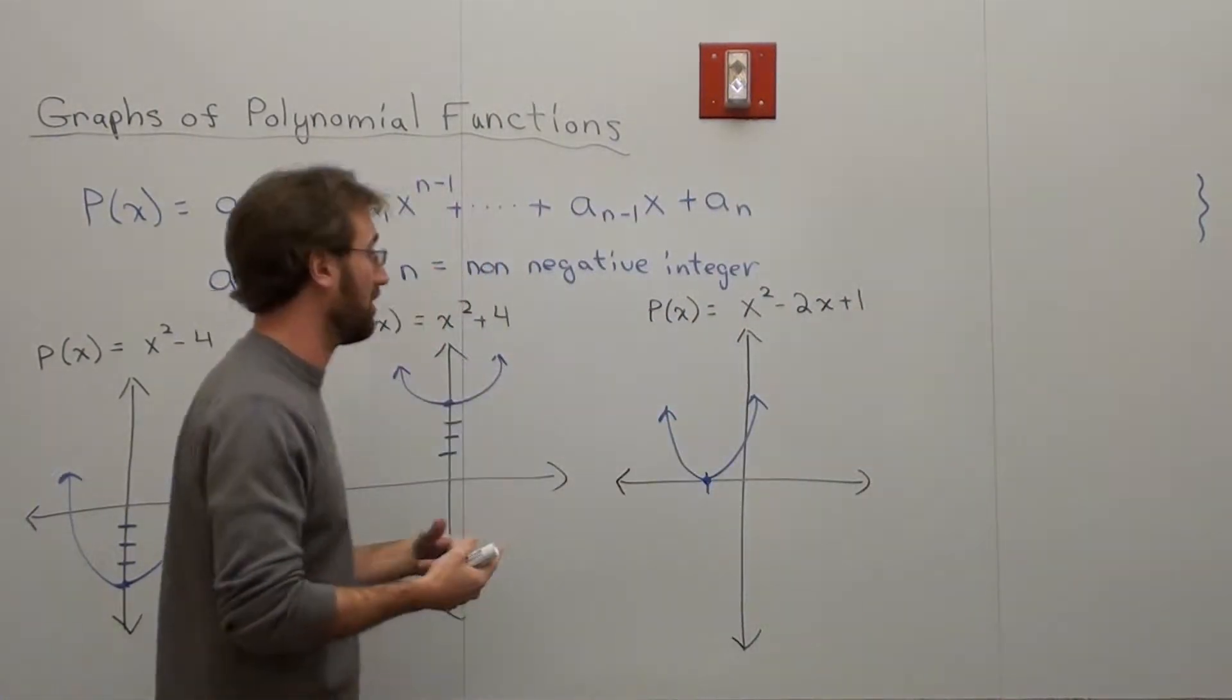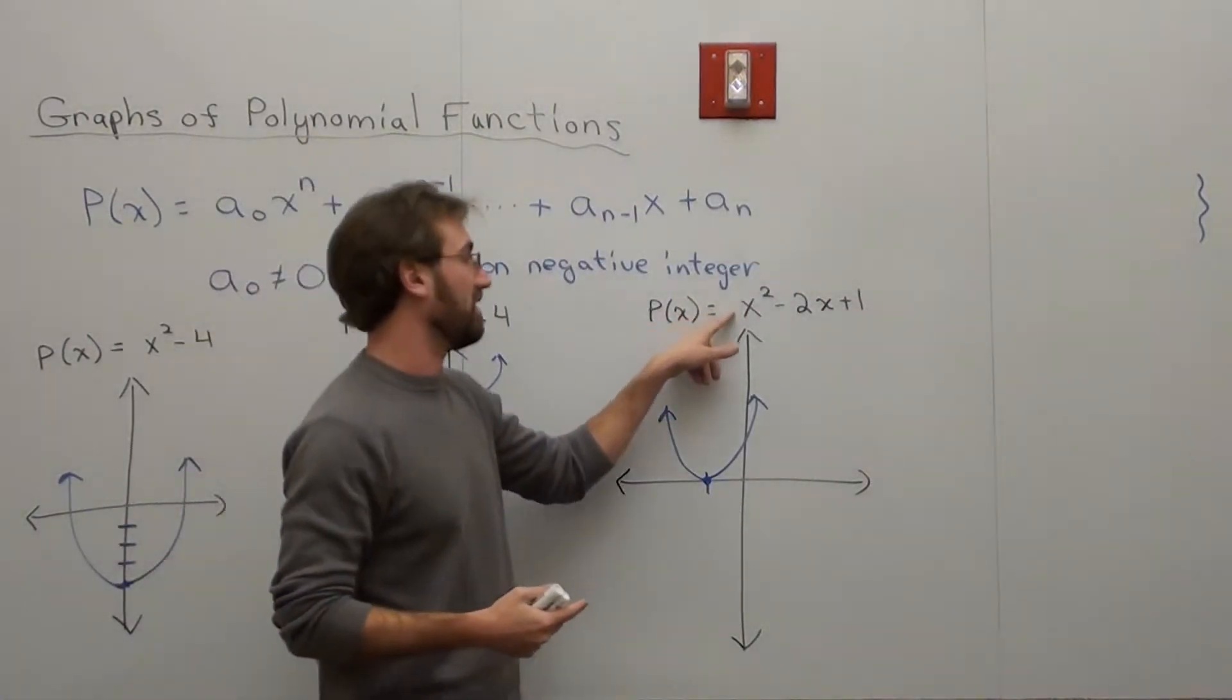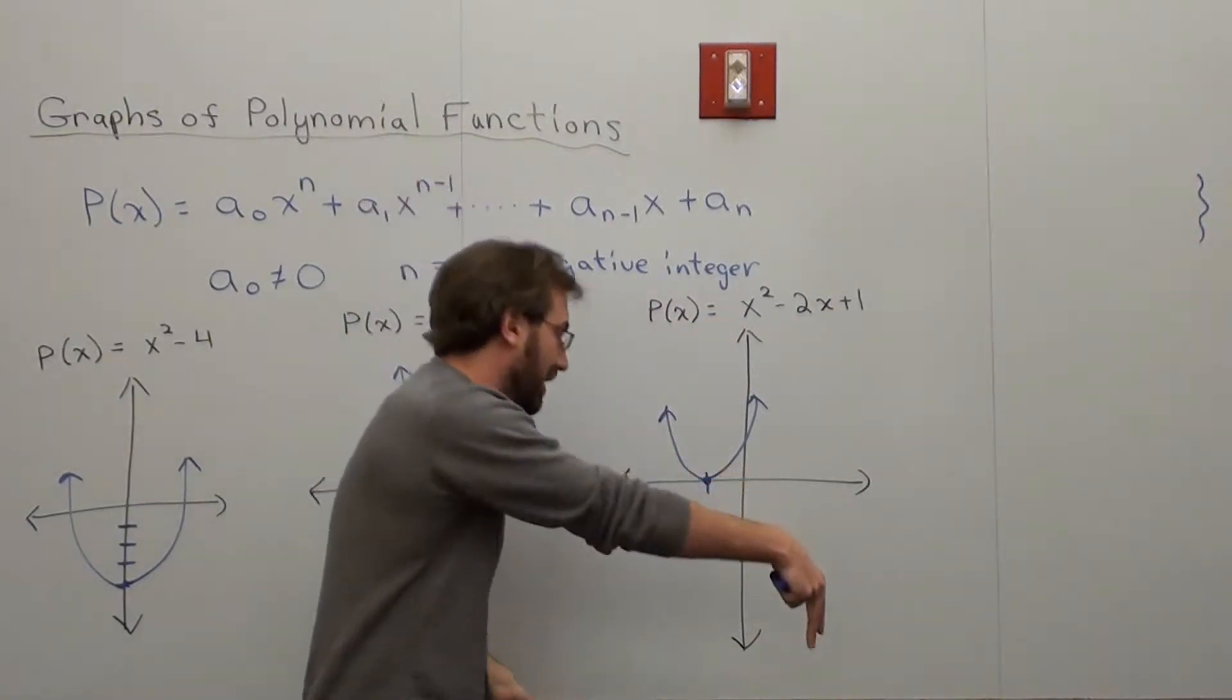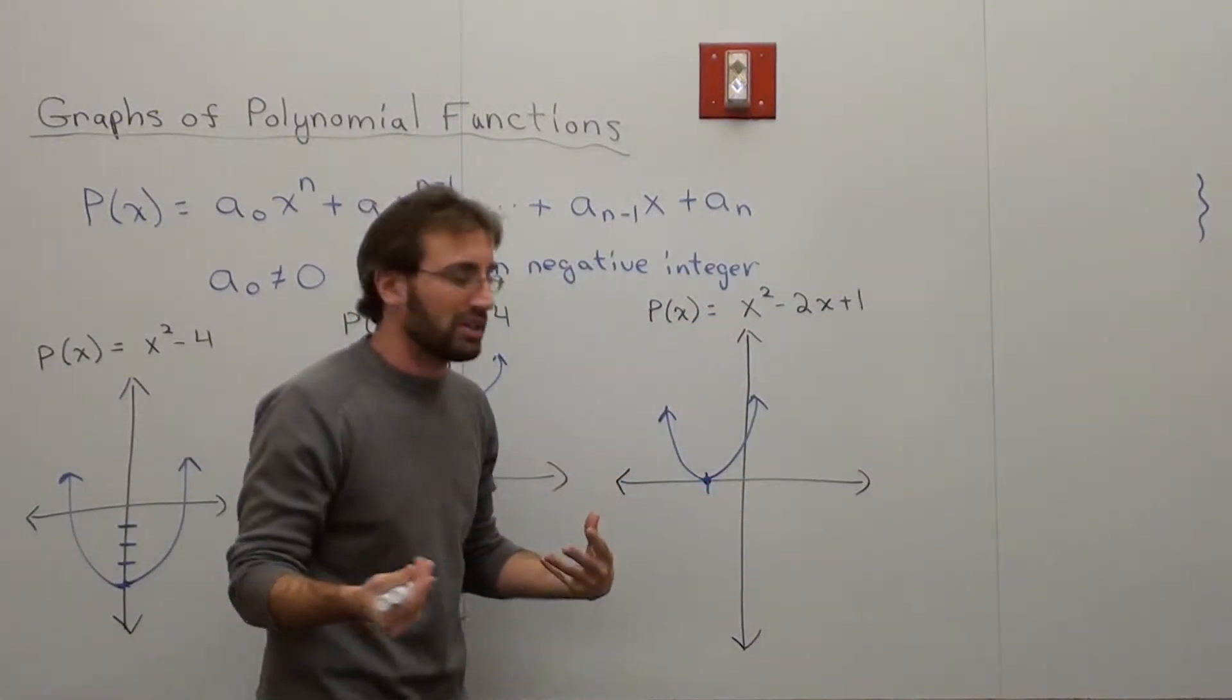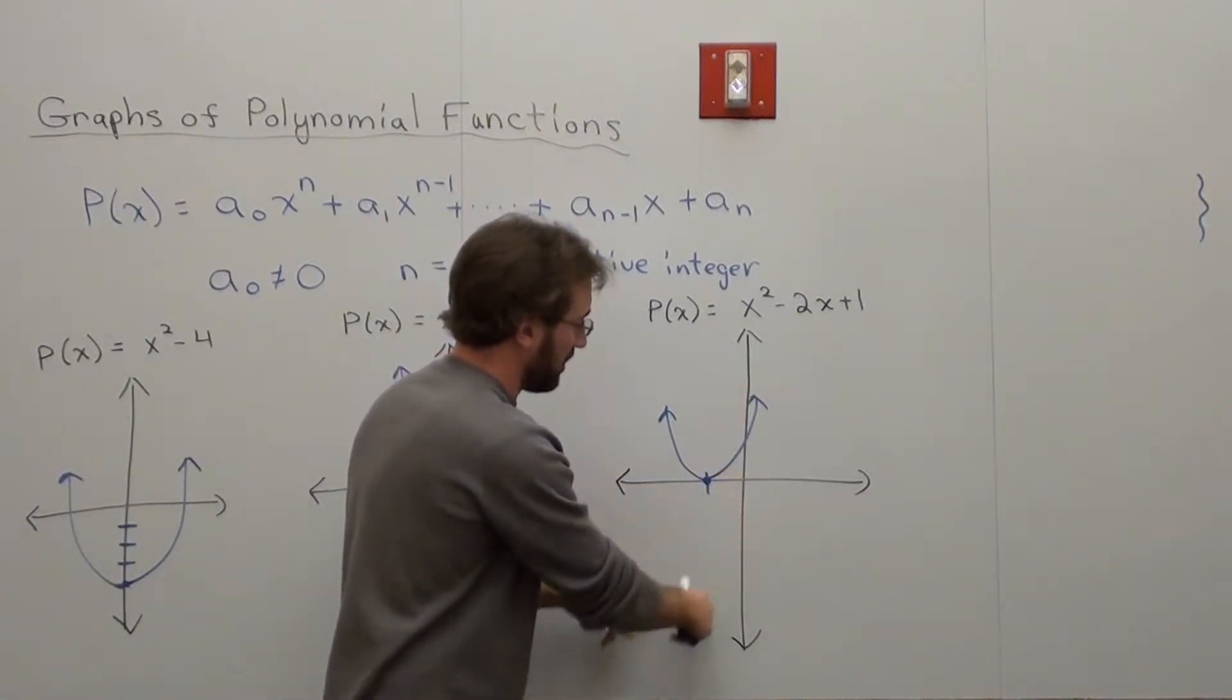One thing that I didn't do here that I did on the last one: if there's a negative in front of the x squared, then it goes down. But we've already talked about that before, so instead of going up like this, it goes down.